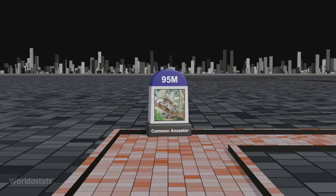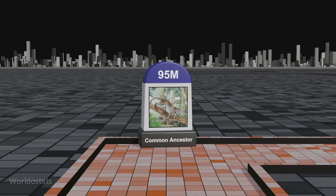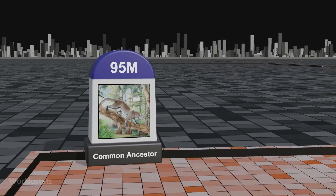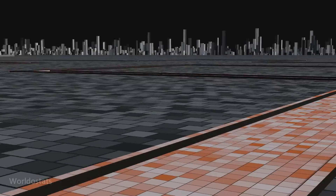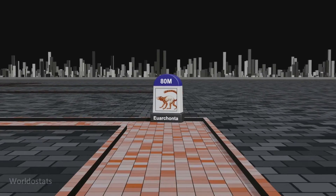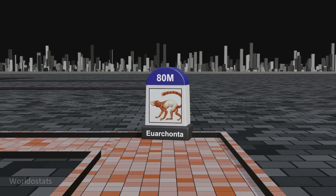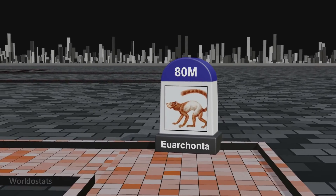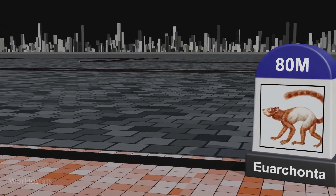95 million years ago saw the evolution of the last common ancestor of rodents, rabbits, ungulates, carnivorans, bats, shrews, and humans. Euarchontoglires, a diverse group of mammals that includes primates, tree shrews, and colugos, underwent evolutionary developments approximately 80 million years ago.